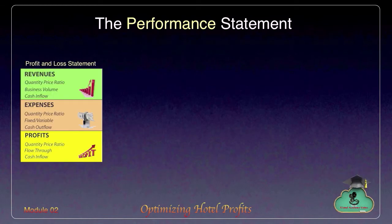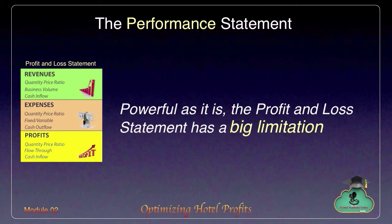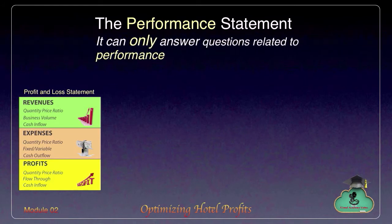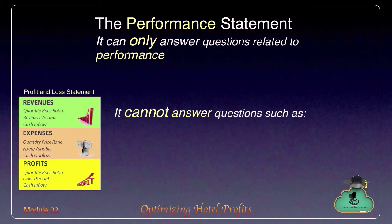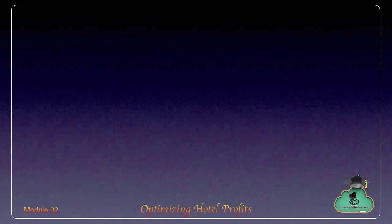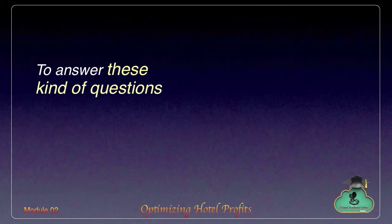Despite its power, the profit and loss statement suffers from a big shortcoming. It would only show part of the picture — the performance or business results of the hotel. For example, it does not tell you what happens to the assets that actually produce the revenues during the month which the profit and loss statement records and shows. A different kind of financial statement is needed to answer these kind of questions.